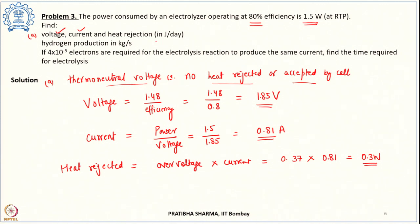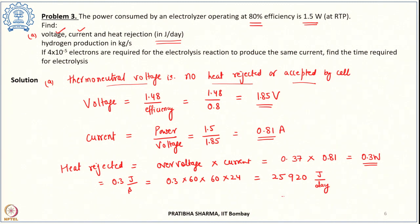To find the heat rejected per day: 0.3 joule per second converted to joule per day is 0.3 × 60 × 60 × 24, which gives 25,920 joules per day. That is the third quantity in part A of the problem.